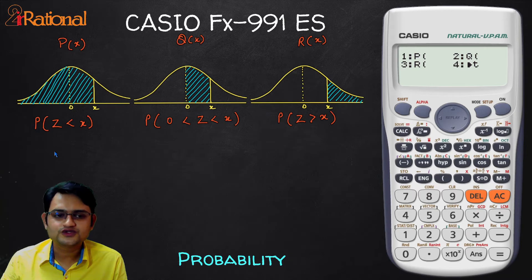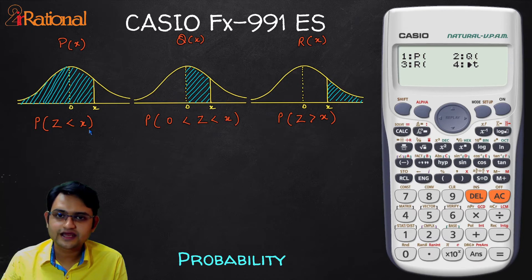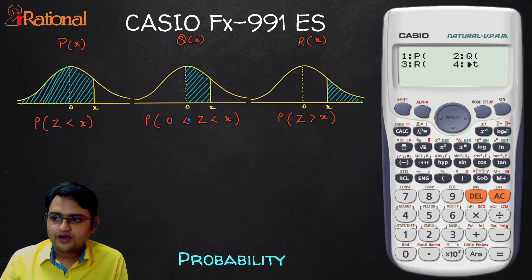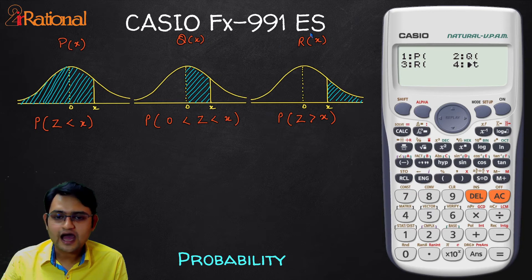Let me explain that using this simple diagram. As you can see here, when we are talking about a standard normal distribution, if you are finding probability from minus infinity to a particular value X, we'll say probability is less than X, we will be using P. When we are finding probability from the central value that is zero to this particular value X, we'll be using Q and if you are finding greater than probability, we'll be using R.